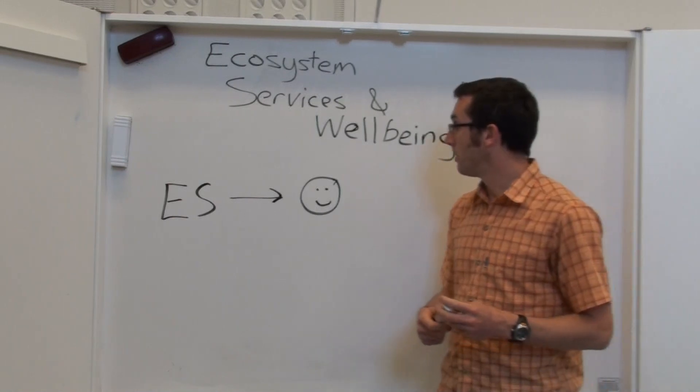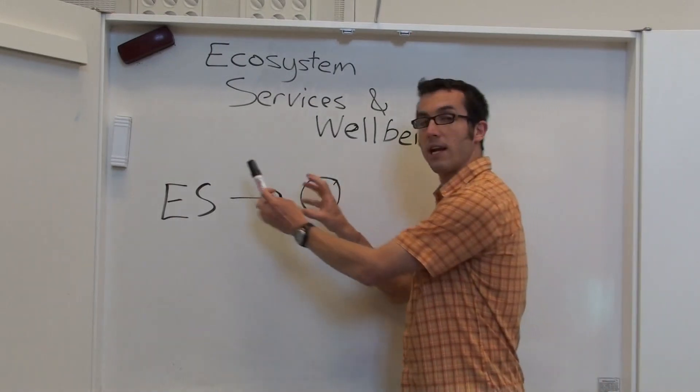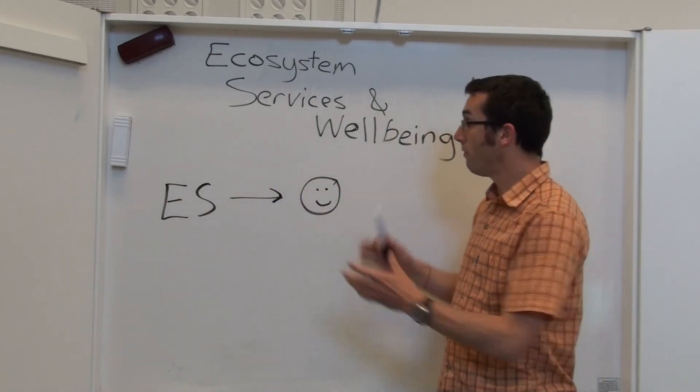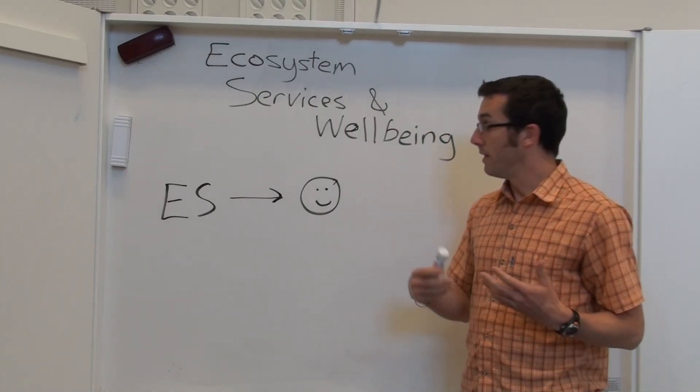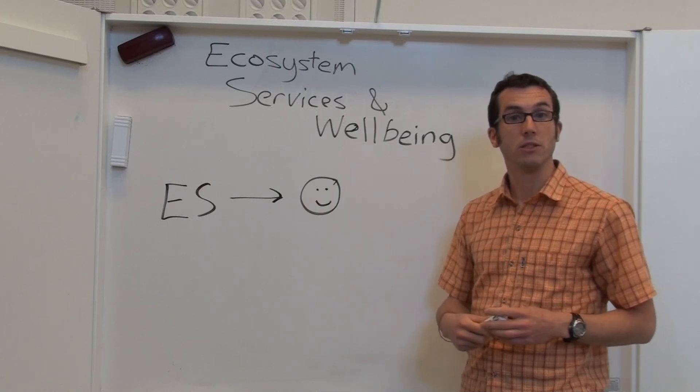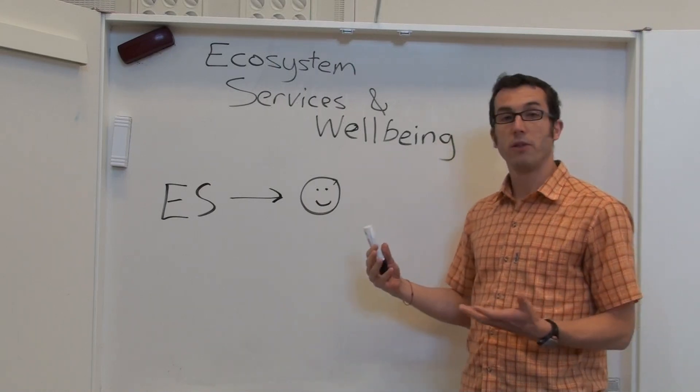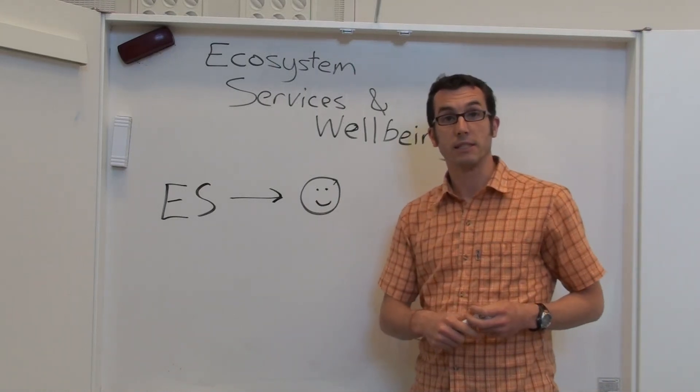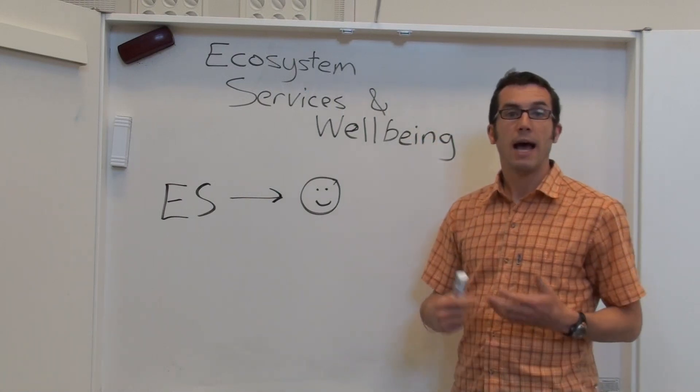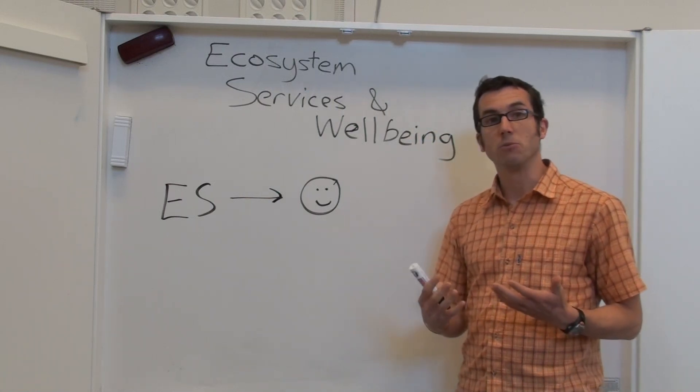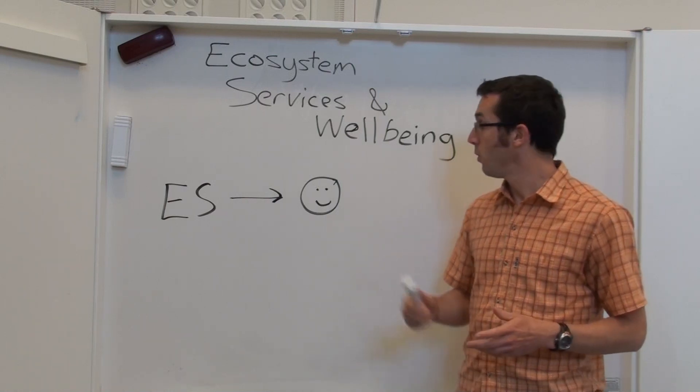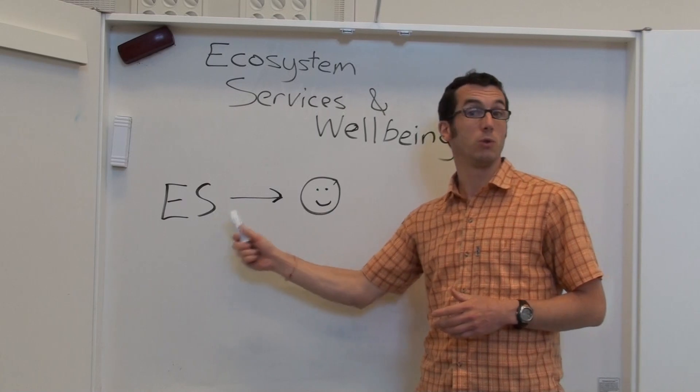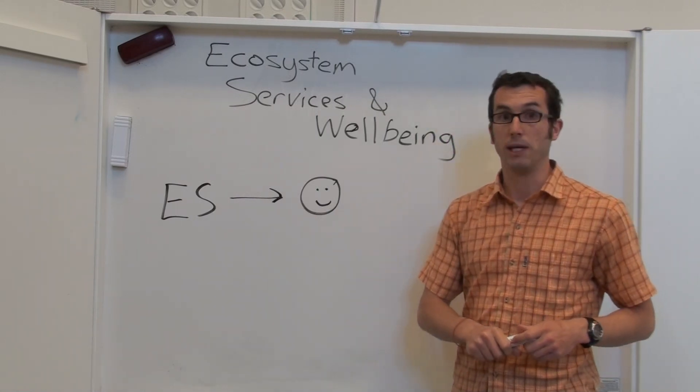What I want to talk to you about today is to try and unpack this a little bit more. Obviously at a global scale we can understand that people of the world need food and that comes from ecosystems, but of course different people in the world don't all experience the same level of well-being. And if we're interested in ecosystem services in the context of a poor country where poverty alleviation is really important, we need to understand more what the link is between ecosystem services and well-being.